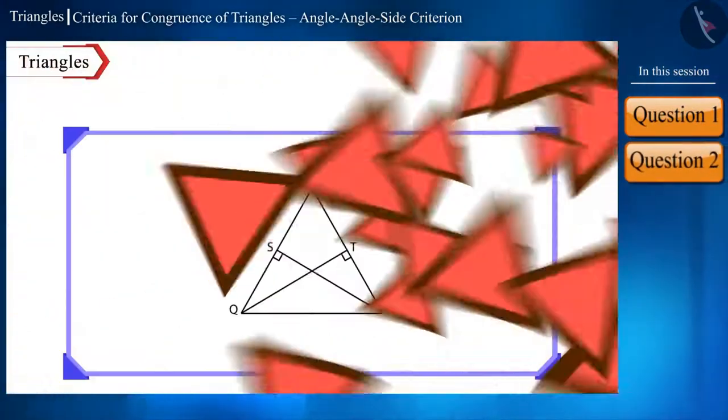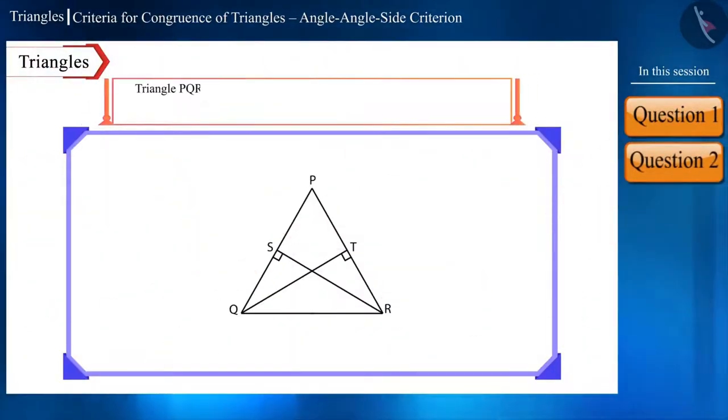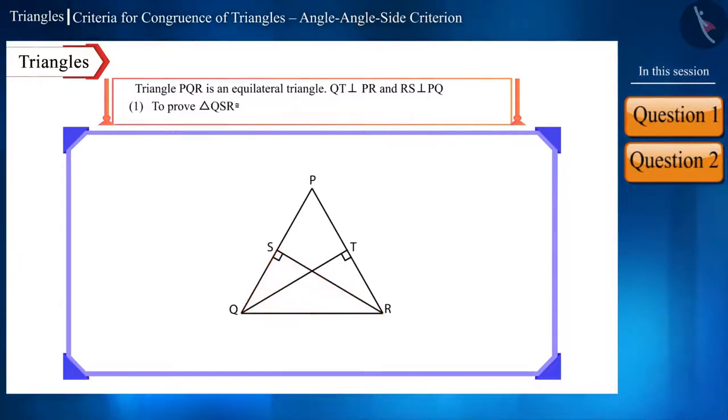Let's move on to the next question. In the given figure, triangle PQR is an equilateral triangle. QT and RS are perpendicular to side PR and side PQ respectively. Show that triangle QSR and triangle RTQ are congruent and state the relationship between sides QS and RT.